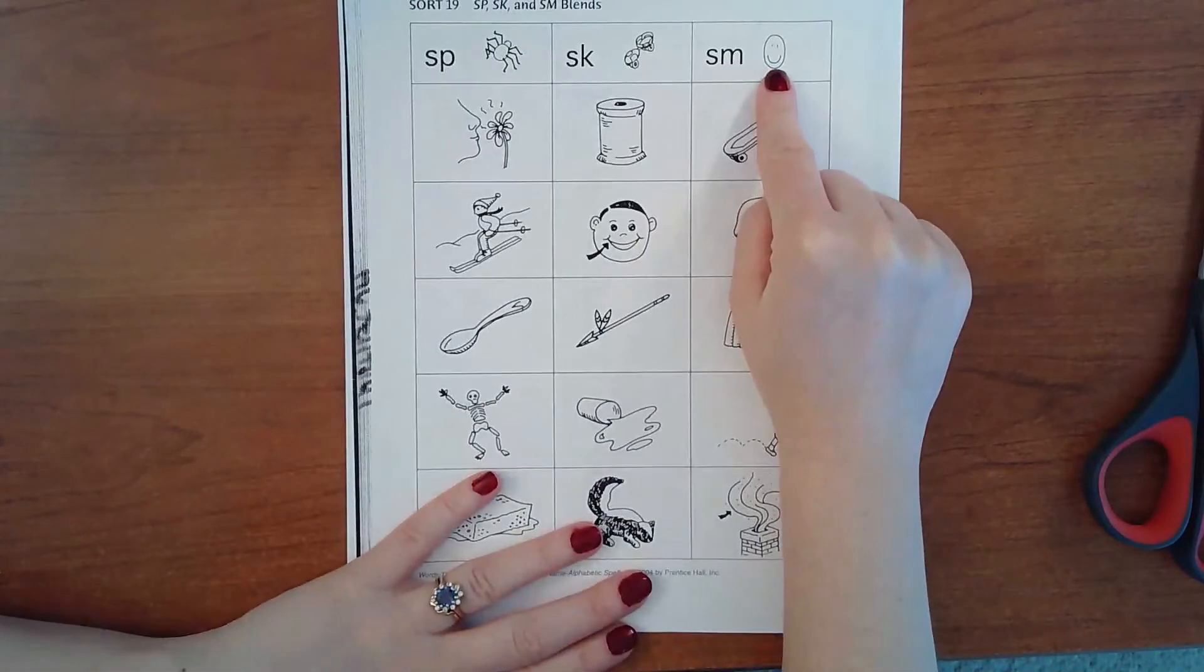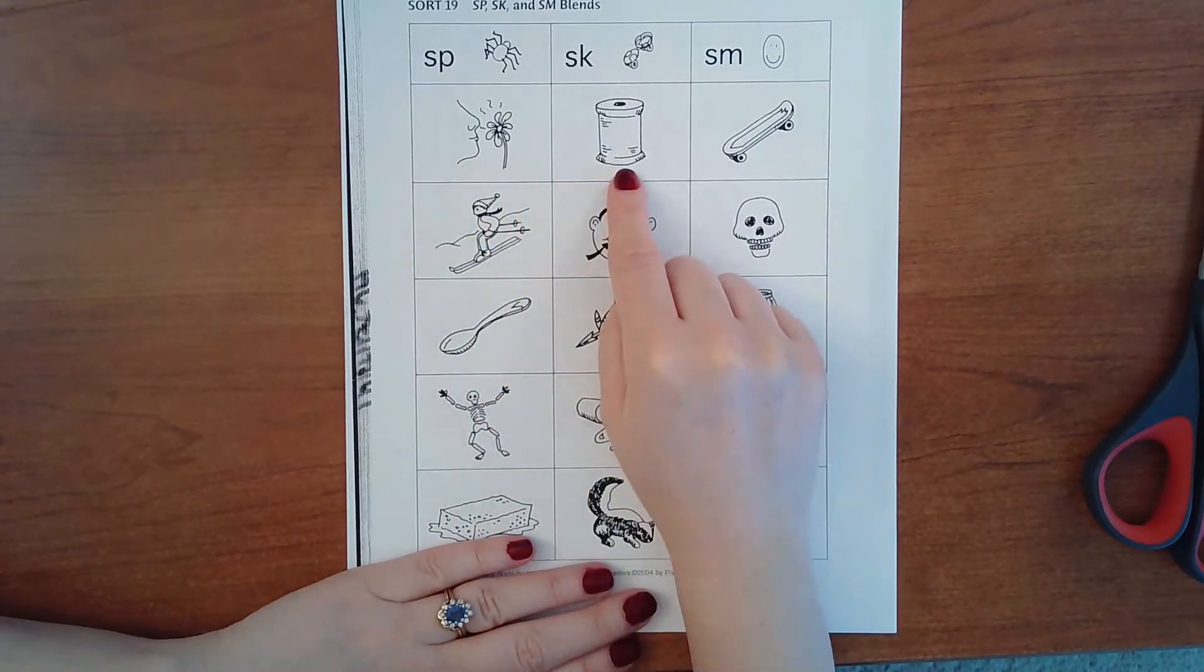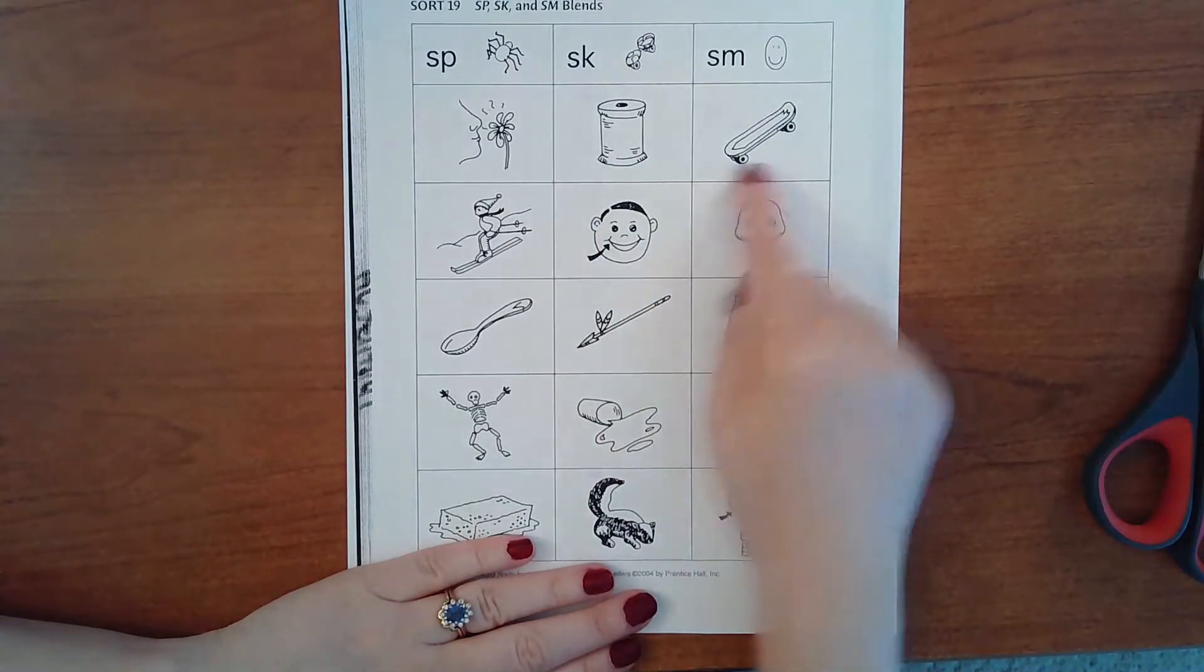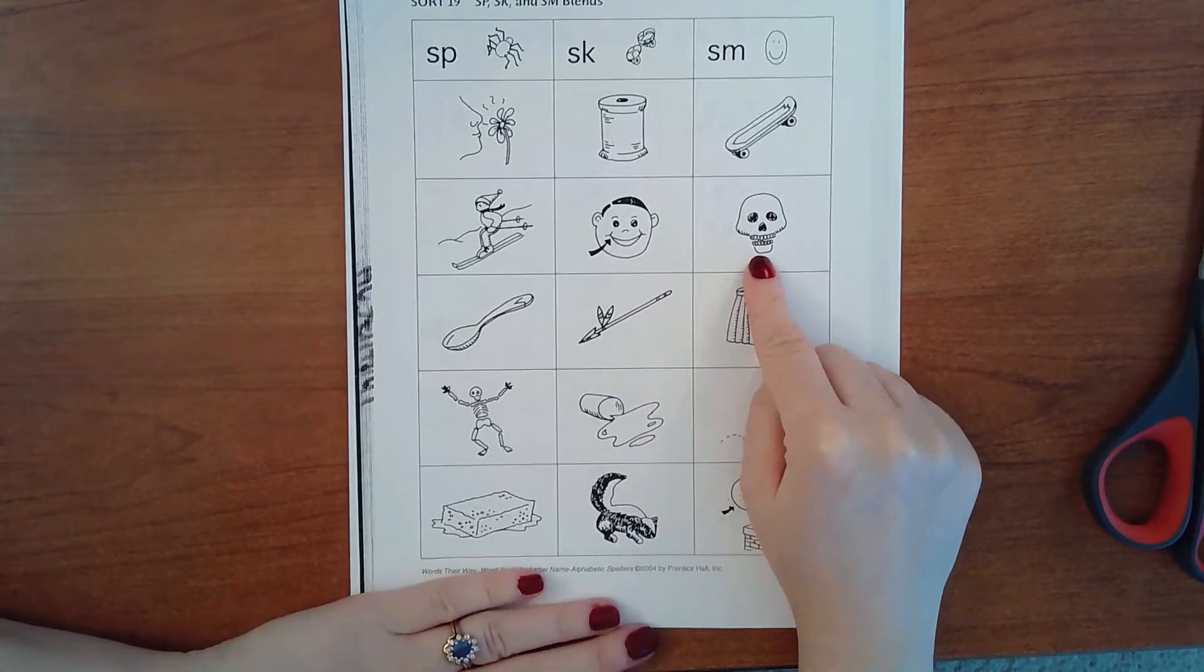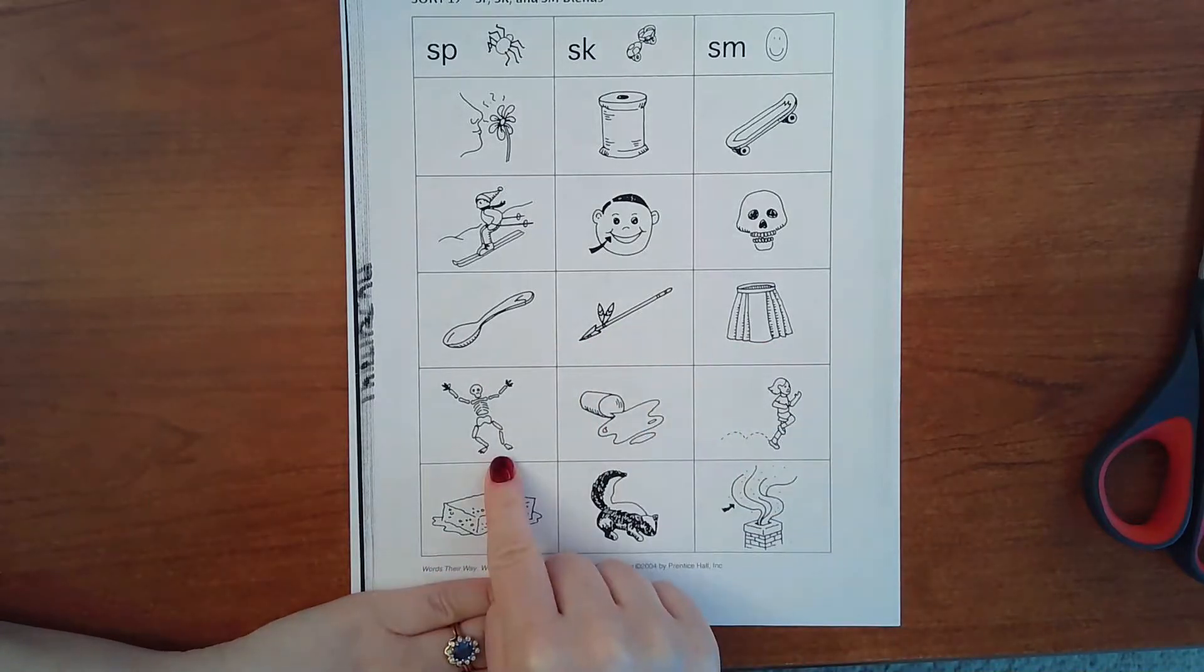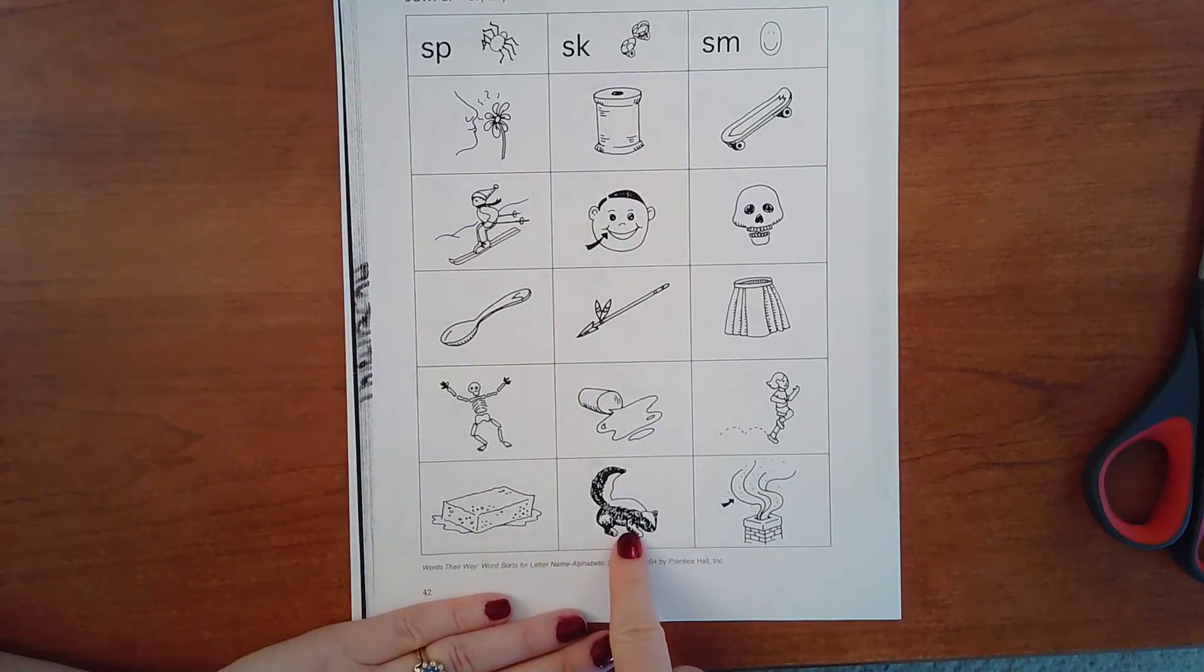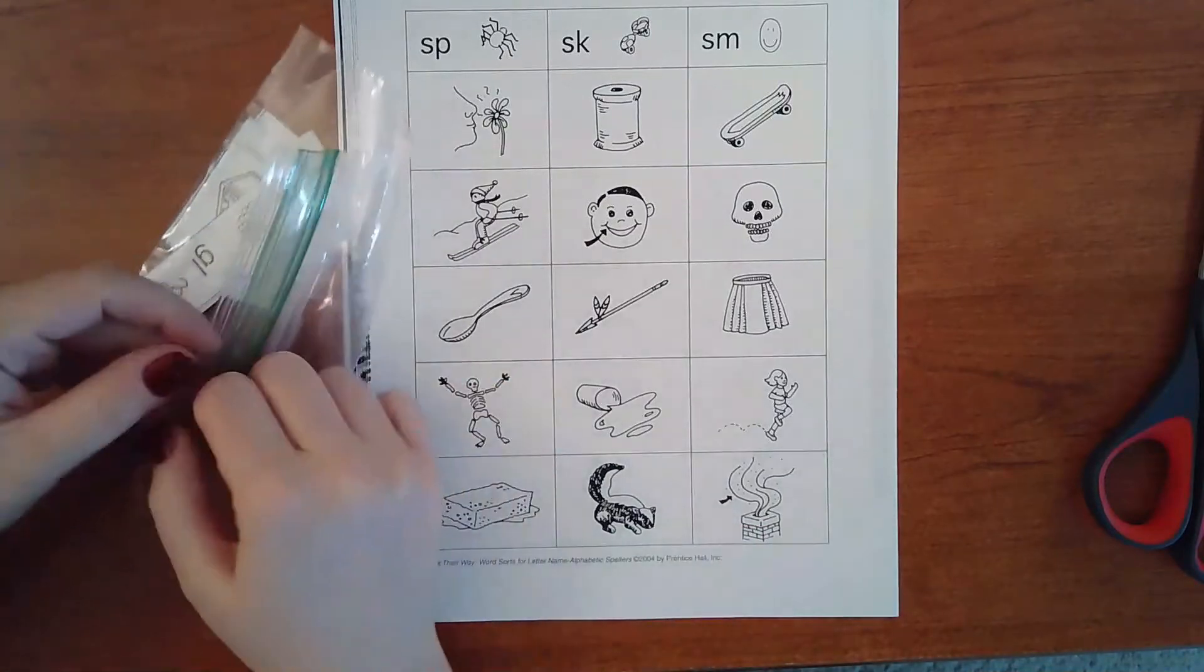Alright, so let's look through these together. Repeat after me: smell, this is a spool—you say spool. Spool is what thread is put on, it's a spool of thread. Skateboard, ski, smile, skull—it's a happy one. Spoon, this is a spear, a spear. Skirt, skeleton, spill, skip, sponge, skunk, and smoke.